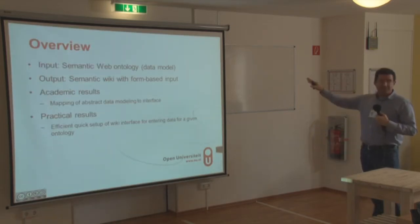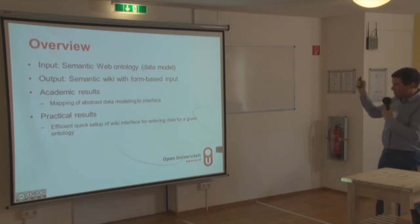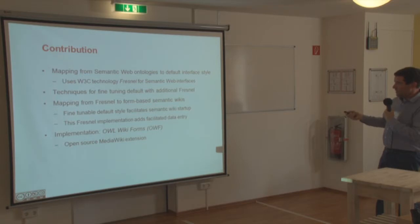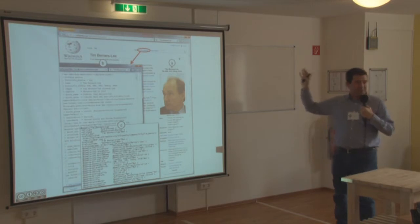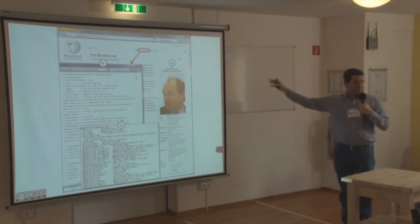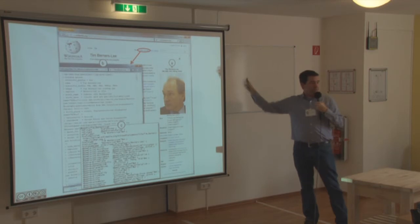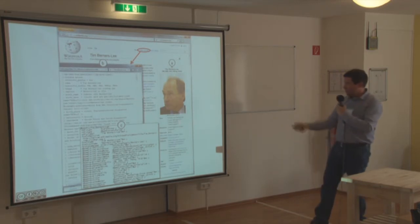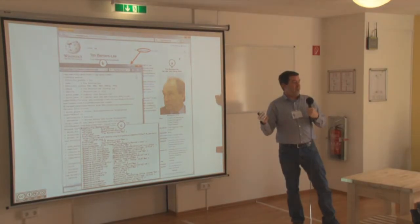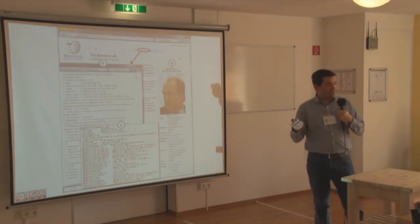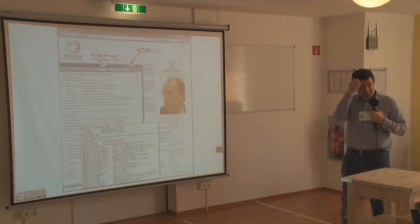So, this is an overview. The input is the ontology; the output is a wiki. This is mostly academic packaging, but I think we're more technically and practically oriented here. This has been my driving example: Tim Berners-Lee from Wikipedia, with an info box. What would happen if Wikipedia were implemented with OWL Wiki Forms? That would have a lot of ramifications for the Wikidata project and also the mappings project.